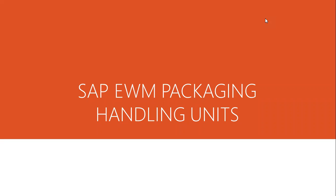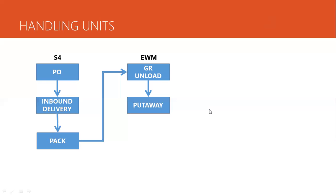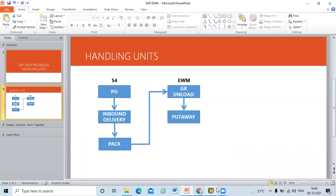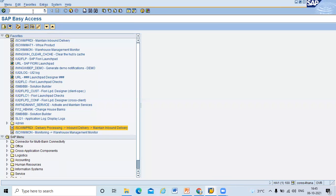Hello everybody, today we are going to see EWM packaging — that is handling units. What we want to do is, in handling units in S4 HANA system, we are going to create a purchase order and create an inbound delivery. In that inbound delivery we are going to pack the material. Once we pack the material, we are going to do goods receipt and unloading in the EWM system, and then put away the handling units in the bin. I'm going to show this in the live system.